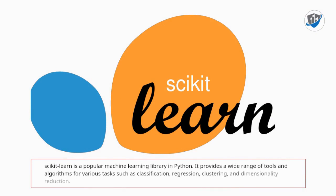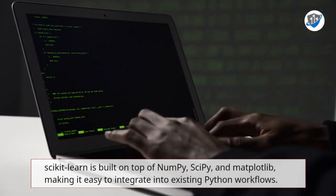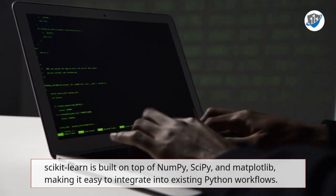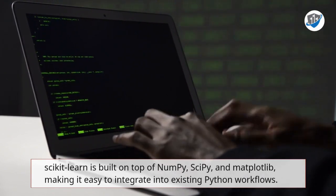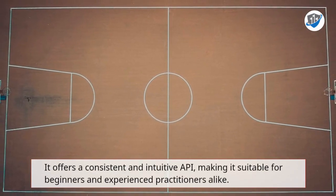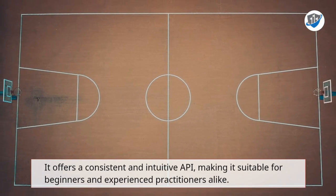Scikit-learn is a popular machine learning library in Python that provides a wide range of tools and algorithms for tasks such as classification, regression, clustering, and dimensionality reduction. It is built on top of NumPy, SciPy, and Matplotlib, making it easy to integrate into existing Python workflows. It offers a consistent and intuitive API, suitable for both beginners and experienced practitioners.